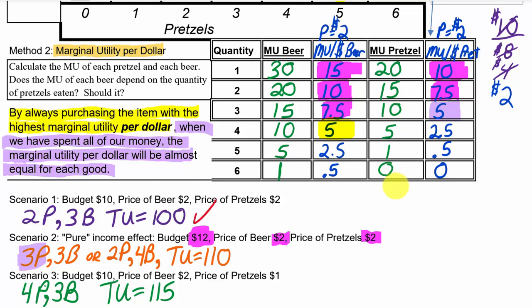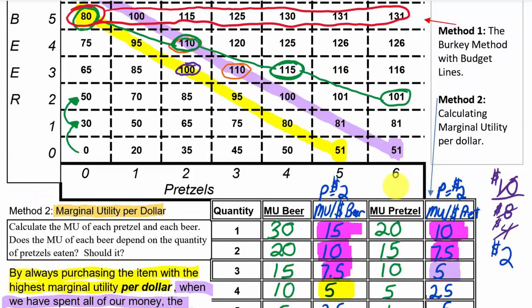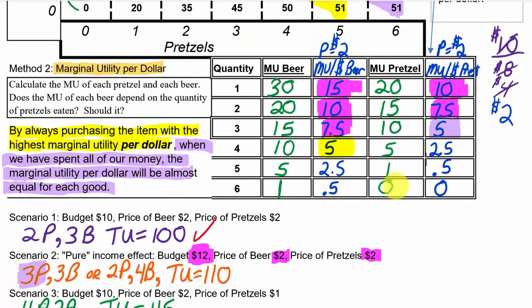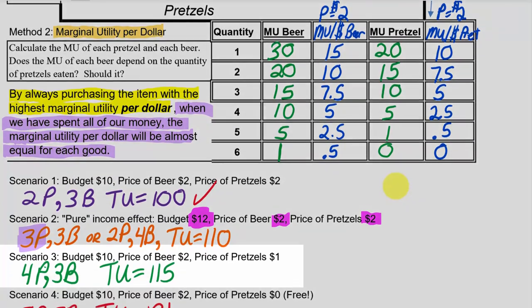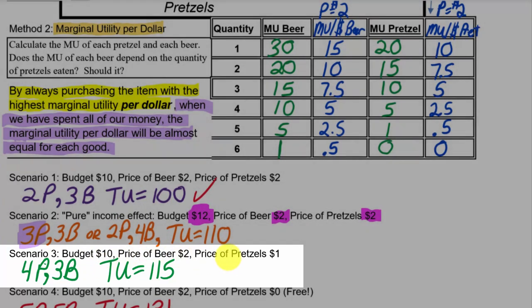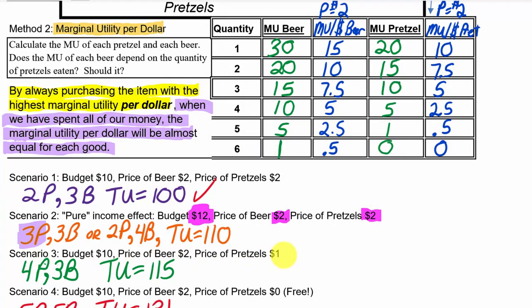Of course it works out that we're maximizing utility either way - using the Berkey method with budget lines, or calculating the marginal utility per dollar. Now let's look at scenario three. Scenario three: back to $10 budget, price of beer is still $2, and price of pretzels is $1. Here we need to calculate a new column.